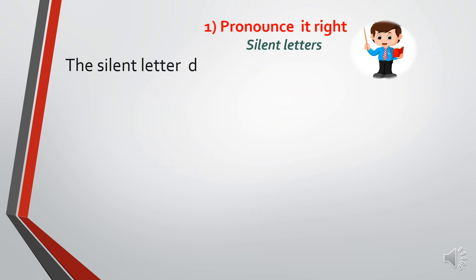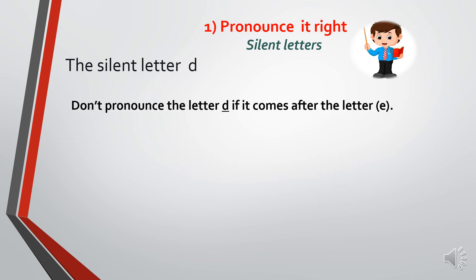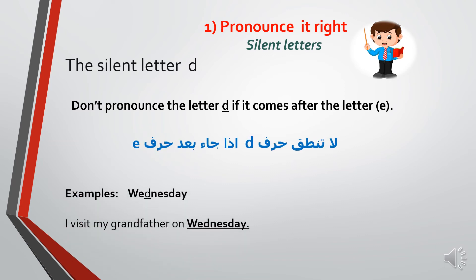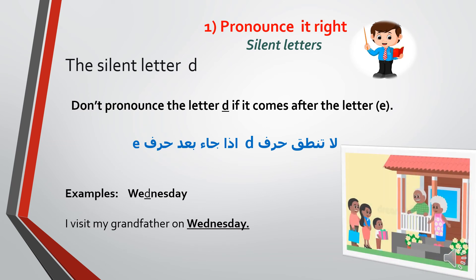Now let's move to the second case where the letter D is silent. The rule says: don't pronounce the letter D if it comes after the letter E. My example today is 'Wednesday' — يوم الأربعاء. Sentence: 'I visit my grandfather on Wednesday.' Notice in 'grandfather' I also didn't pronounce the D — it was silent because of AN — and in 'Wednesday' the D is silent because it came after the letter E. So the sentence means: أنا بزور جدي يوم الأربعاء.